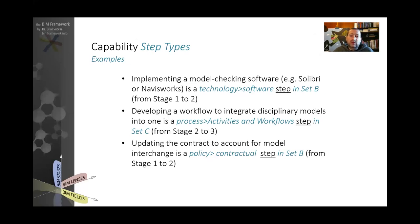This type of step is in step C, meaning we are at the modeling stage and we want to move into the network-based integration stage. In order to do that, we need to develop certain workflows in order to integrate these disciplinary models. So this falls under the process activities and workflow step. Third and final example: if we want to move from stage one to stage two, again from modeling to collaboration, we need to update the contract to account for model interchanges.